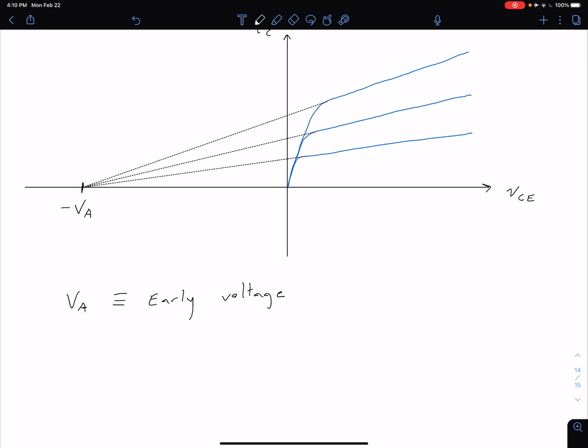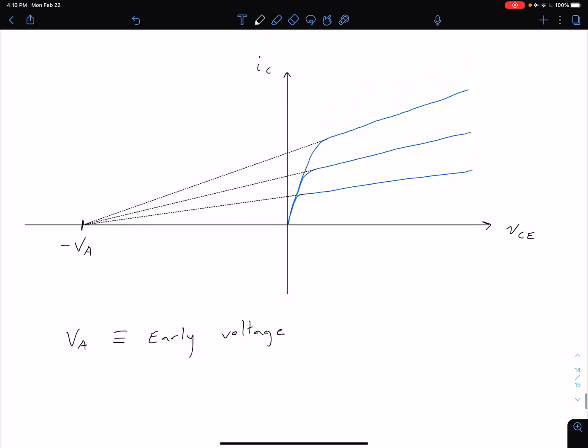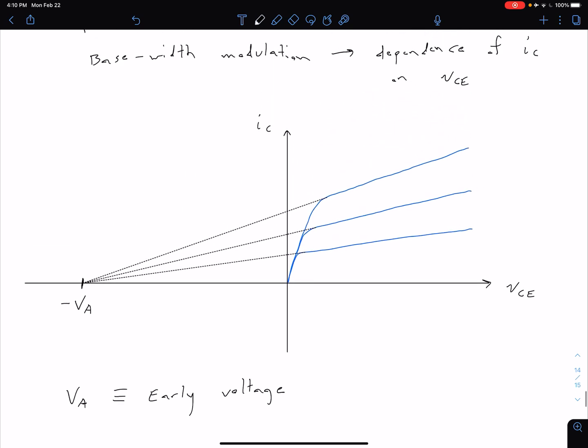So an important parameter that we're going to come to a little later on is something called our output resistance. And so our output resistance is related to the slope of these curves here.